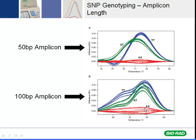You want amplicons to be well below 100 base pairs if possible. You can see the difference here — looking at the clustering of the AA, AT, and TT variants, we're seeing differences between the red, green, and blue, but nowhere near as nice as with a 50 base-pair amplicon where we see very clearly the differences in clustering between those mutants. This is a key design aspect that people often overlook when designing experiments for high-resolution melt.